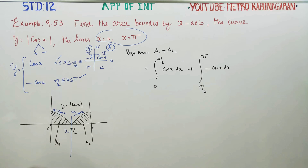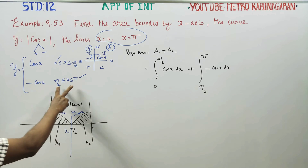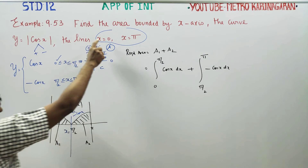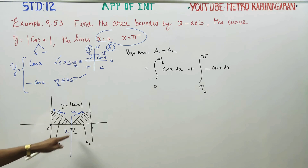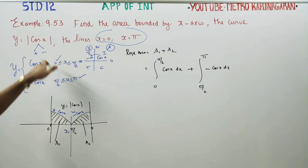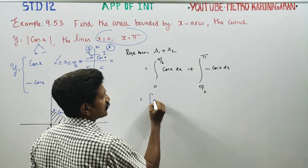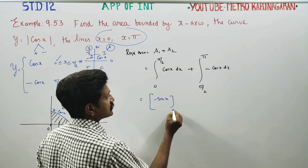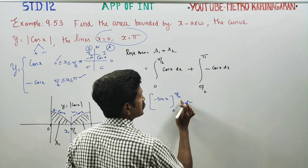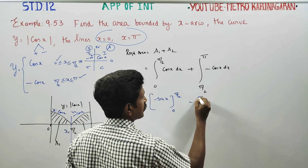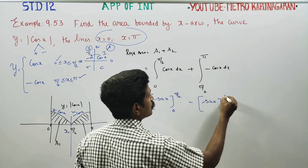The first quadrant part is positive and the second quadrant part is negative — that concept is used here. Over the interval 0 to 180, you will get negative values then positive values. Integration of cos x is sin x. Minus value will be added — plus into minus gives minus. Integration of cos x is sin x, evaluated from pi by 2 to pi.